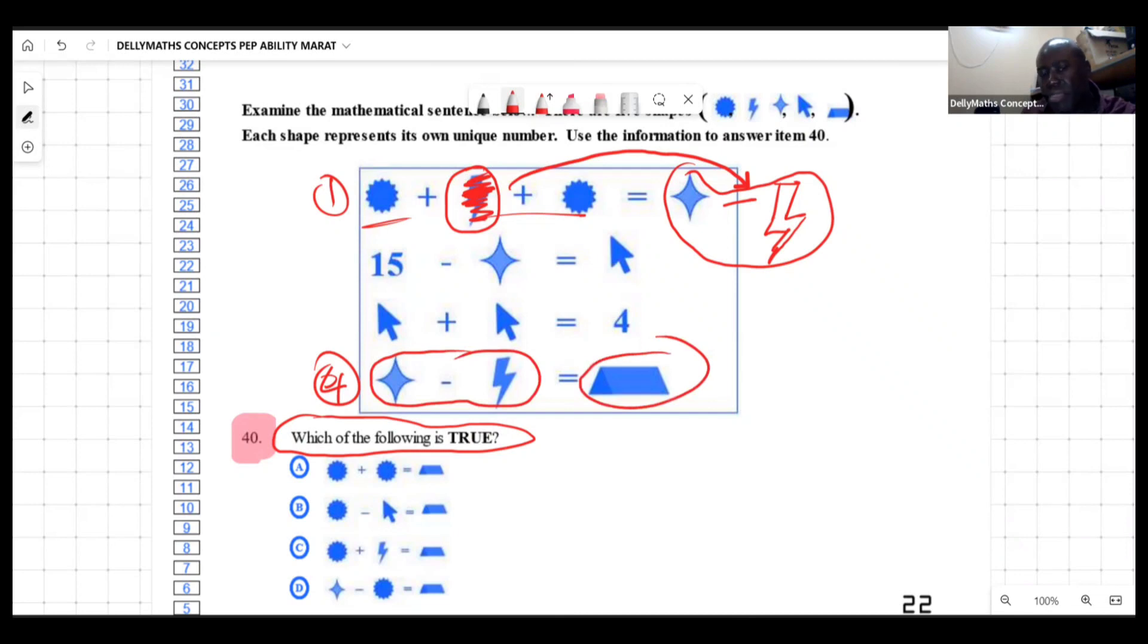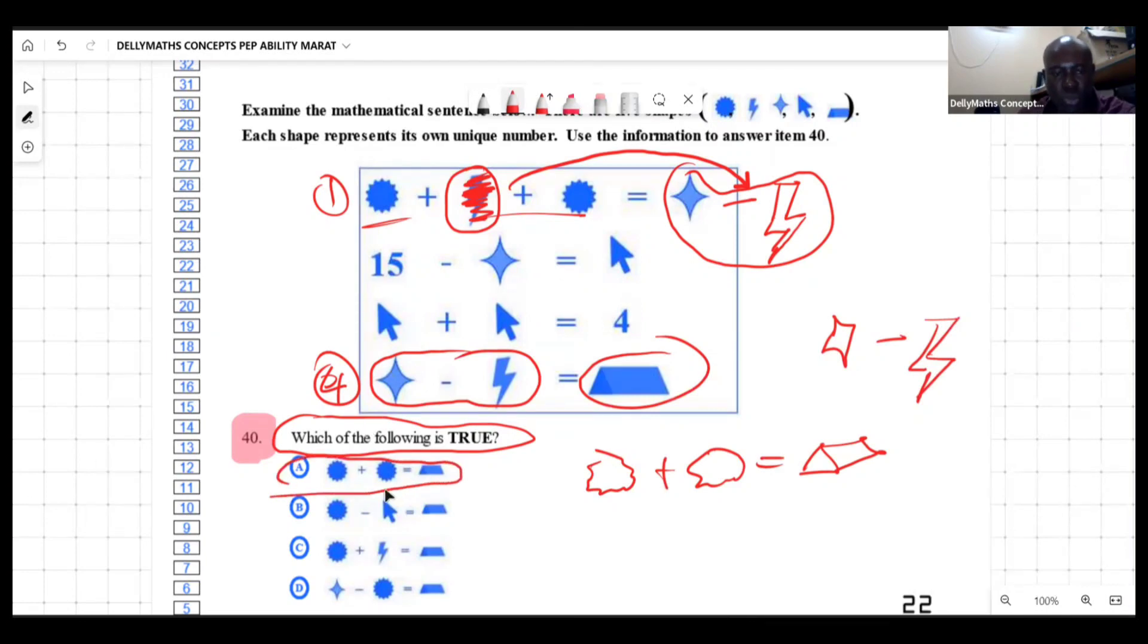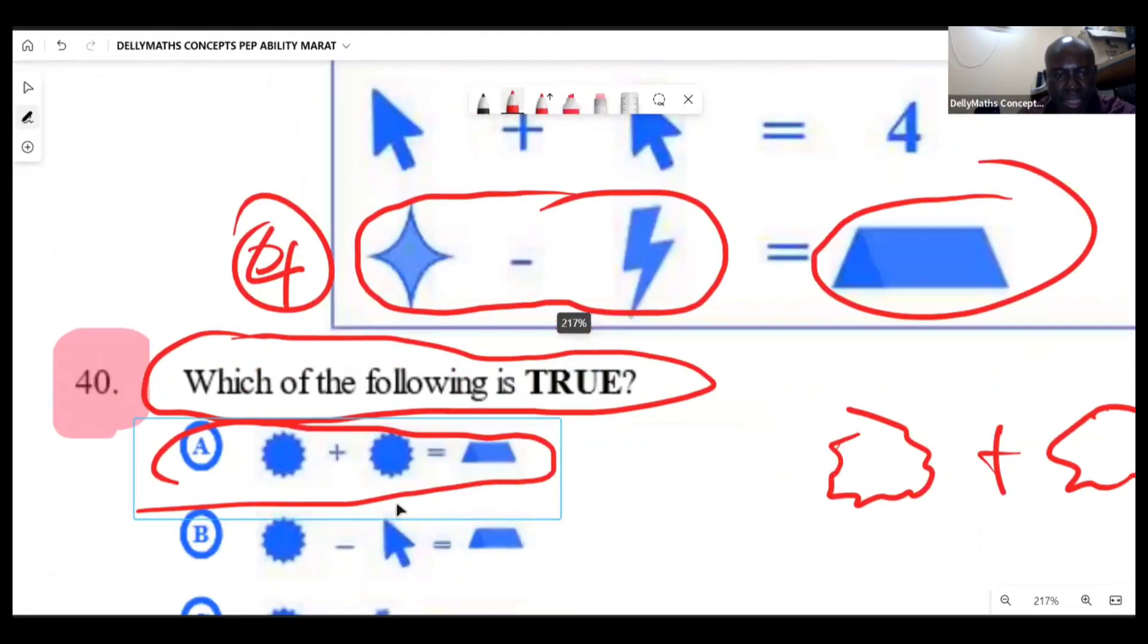With that information I can say that the two suns is the same thing as a prism, because both of them would be a star minus lightning. So this statement here is true. A is true right there.